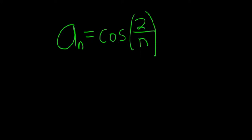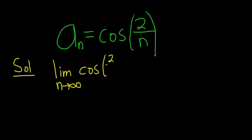In this problem, we're being asked to find the limit of the sequence. So to find the limit of the sequence, we take the limit as n goes to infinity. And here the sequence is the cosine of 2 over n.